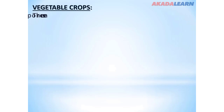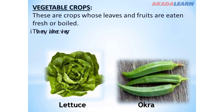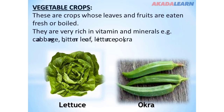Vegetable crops are crops whose leaves and fruits are eaten fresh or boiled. They are very rich in vitamins and minerals. Examples include cabbage, bitter leaf, lettuce, okra, onions, water leaf, and many more.